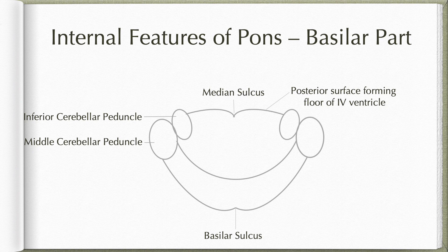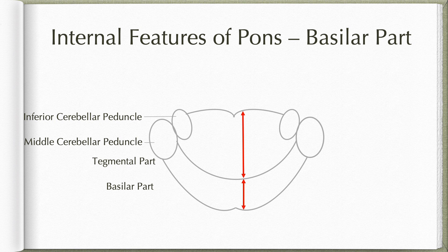No matter at what level you take a section of pons, it shows two parts: an anterior basilar part and a posterior tegmental part. The basilar part has a uniform design throughout the entire length of the pons, whereas the tegmental part varies between upper and lower levels. Let us first consider the basilar part.